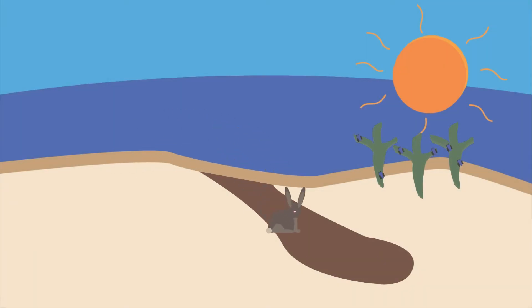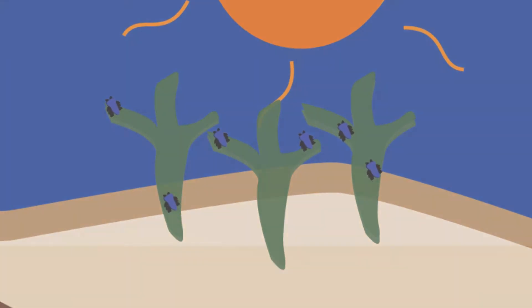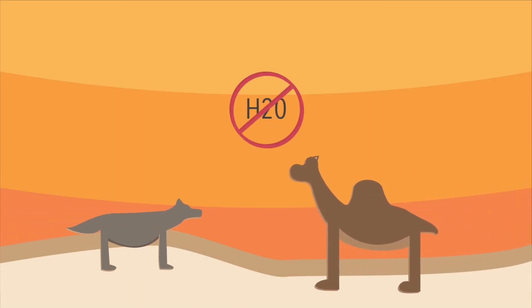They can hide underground to keep cool during the day and consume small plants containing sap and nectar. Larger animals such as coyotes, camels, and tortoises have a harder time keeping cool and need a lot more water.